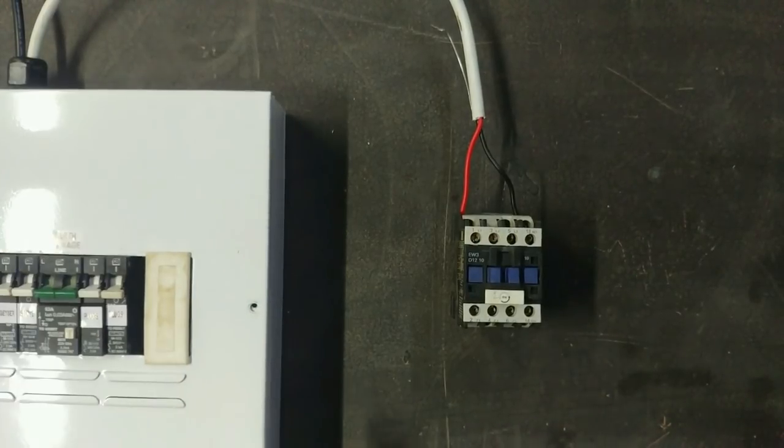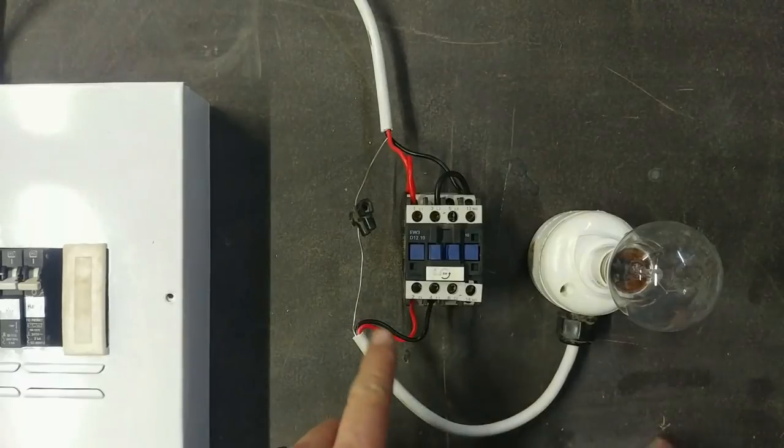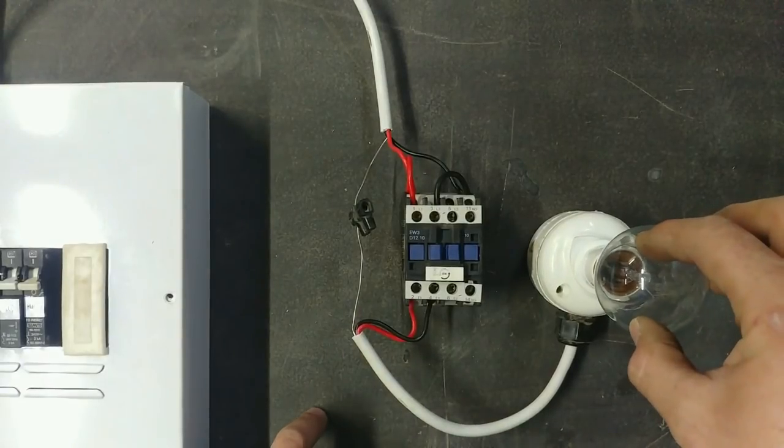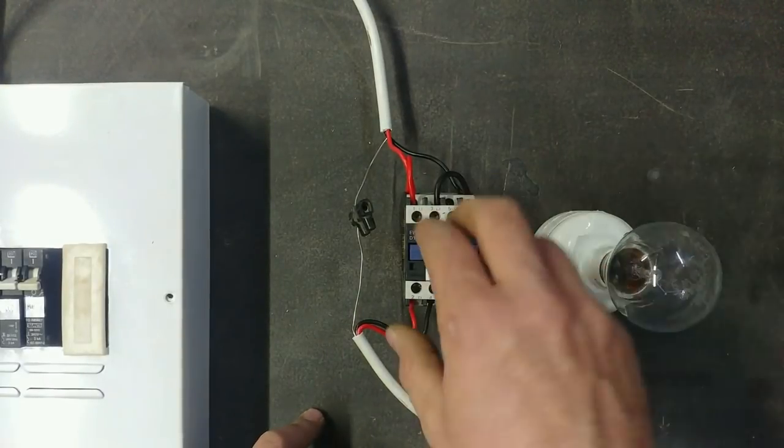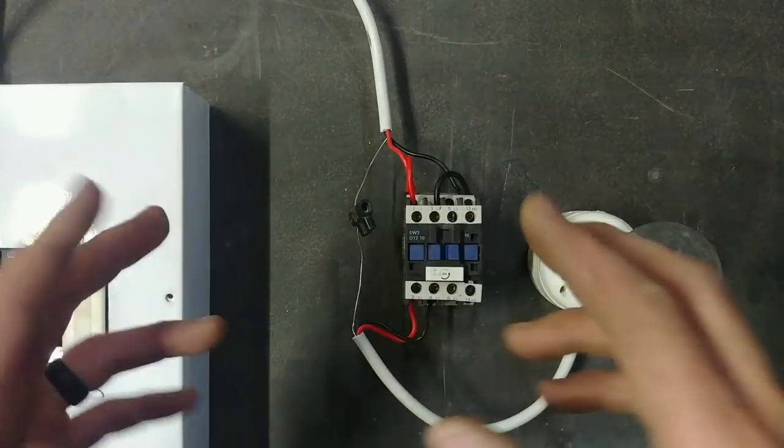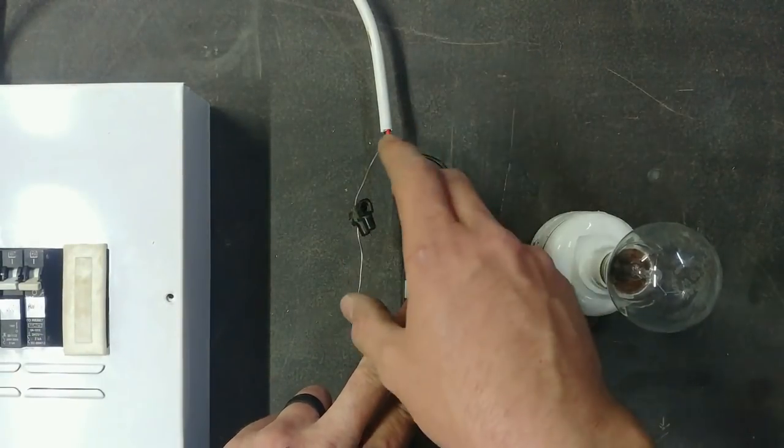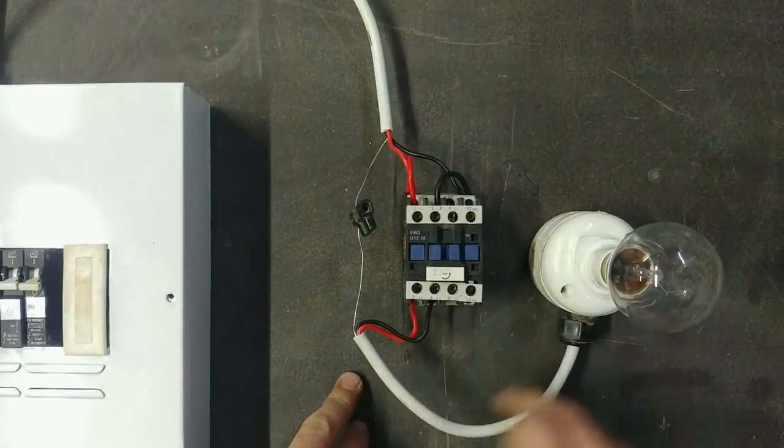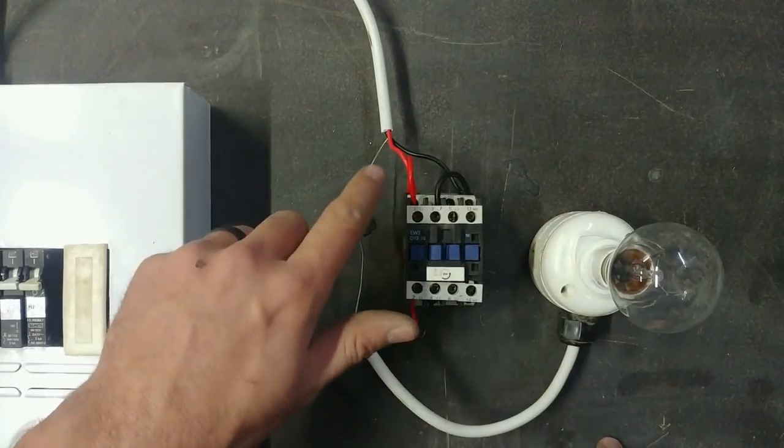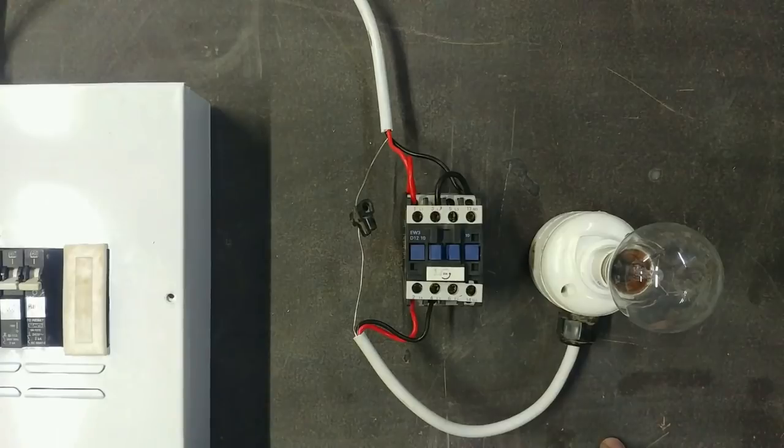Let's switch something on. Because this is a 240 volt light bulb and this is a 240 volt contactor, 230 volt, I have just bridged the neutral and the live and put the neutral and the live to the light bulb. So let's switch this on and let the contactor do its thing.